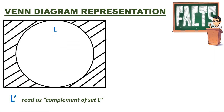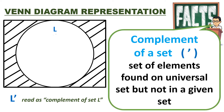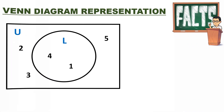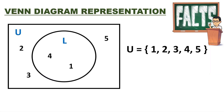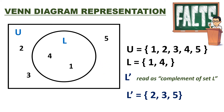Lastly, we have what we call the complement of a set — the set of elements found in the universal set but not in a given set. In the given figure, all the elements found in the rectangle, our universal set, in the shaded area are what we call the complement of set. In our example, set U is our universal set containing elements 1, 2, 3, 4, 5, and set L contains elements 1 and 4. To find the complement of set L, find the elements in the universal set but not in set L. So, the complement of set L is 2, 3, and 5.